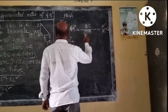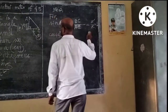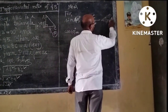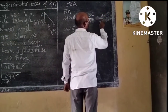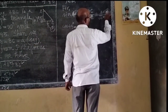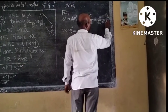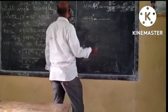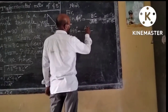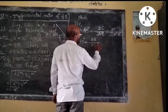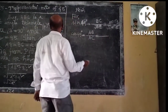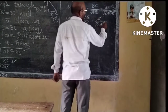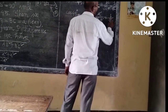Next, cos 45 degrees. The hypotenuse is AC and its value is root 2 A. Cos 45 equals base by hypotenuse, which is AB by AC. AB is A and AC is root 2 A. After cancelling A, we have 1 by root 2.